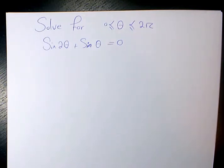The trigonometric equation I chose for you to solve here is sine 2 theta plus sine theta equals 0. We need to solve for theta when theta is between 0 and 2 pi.